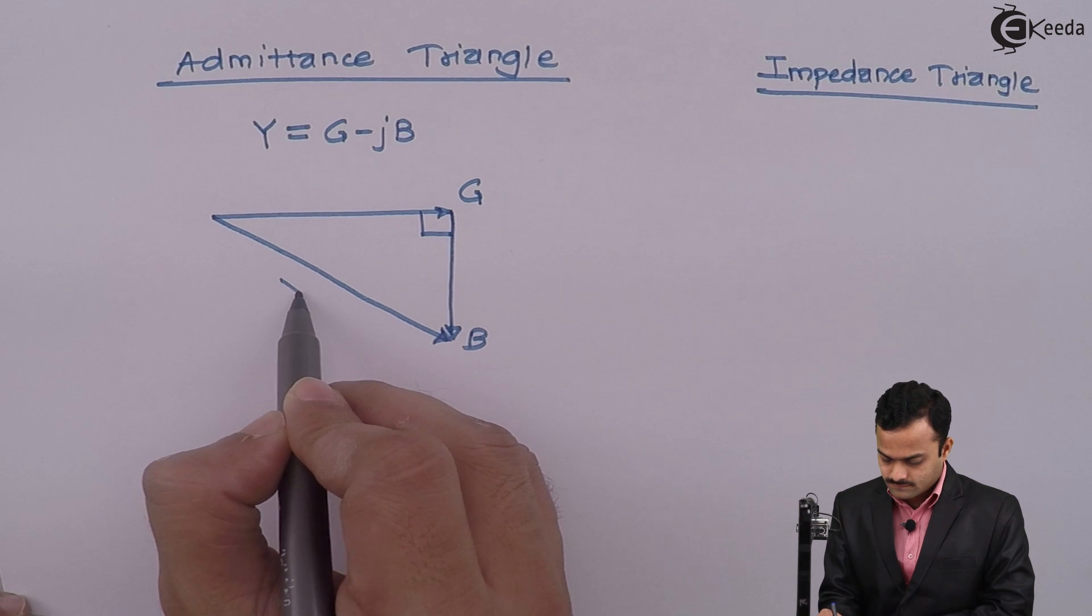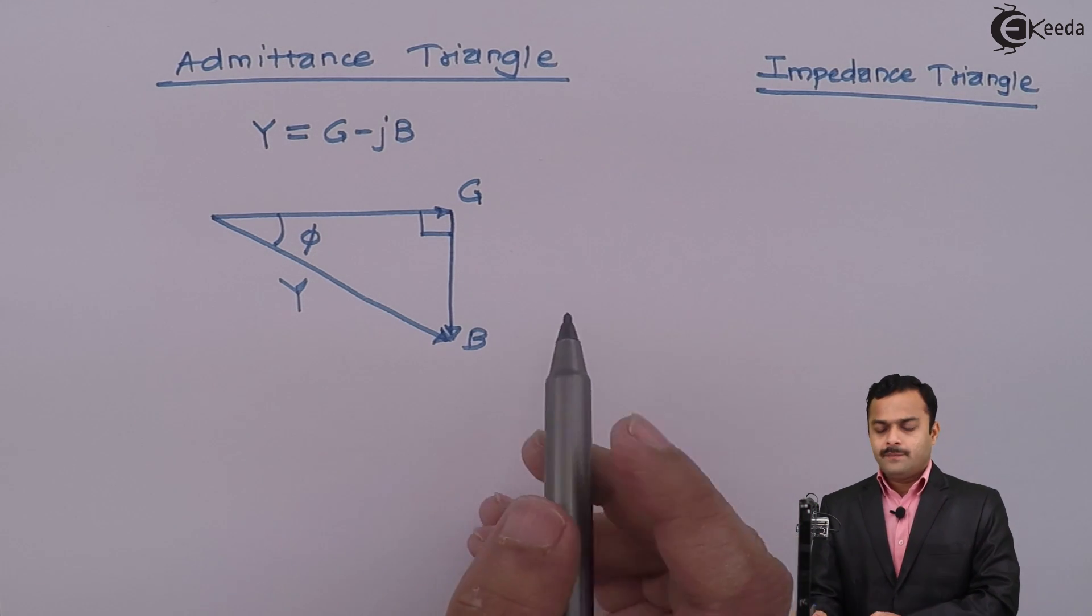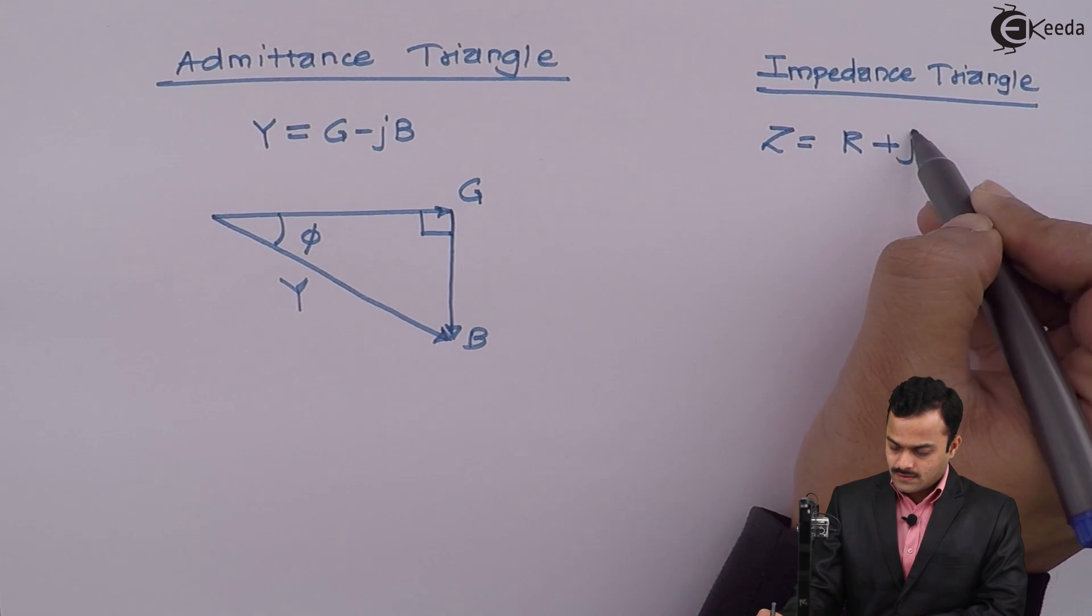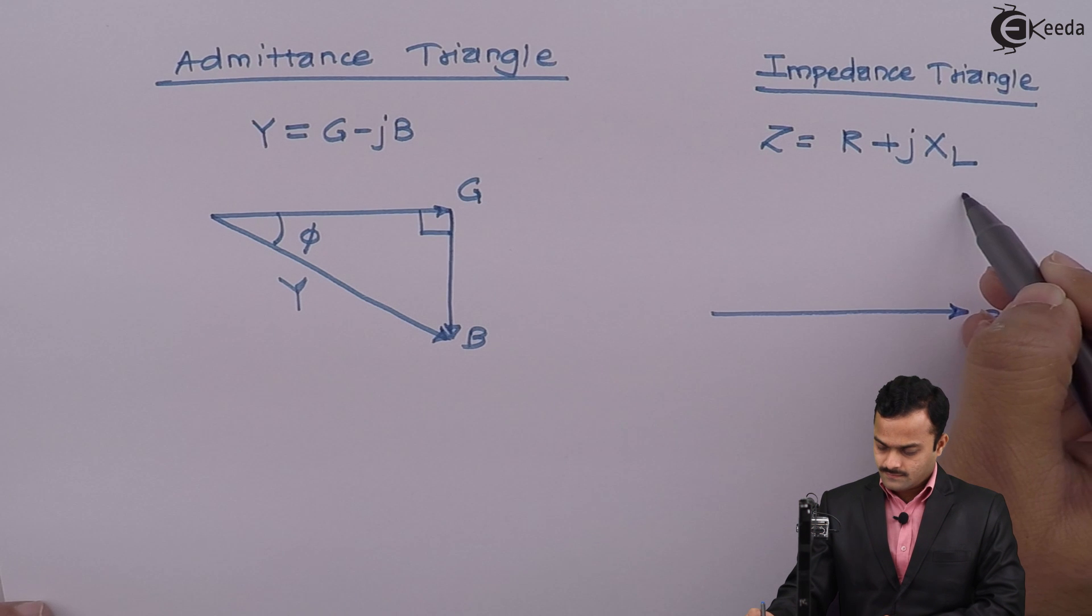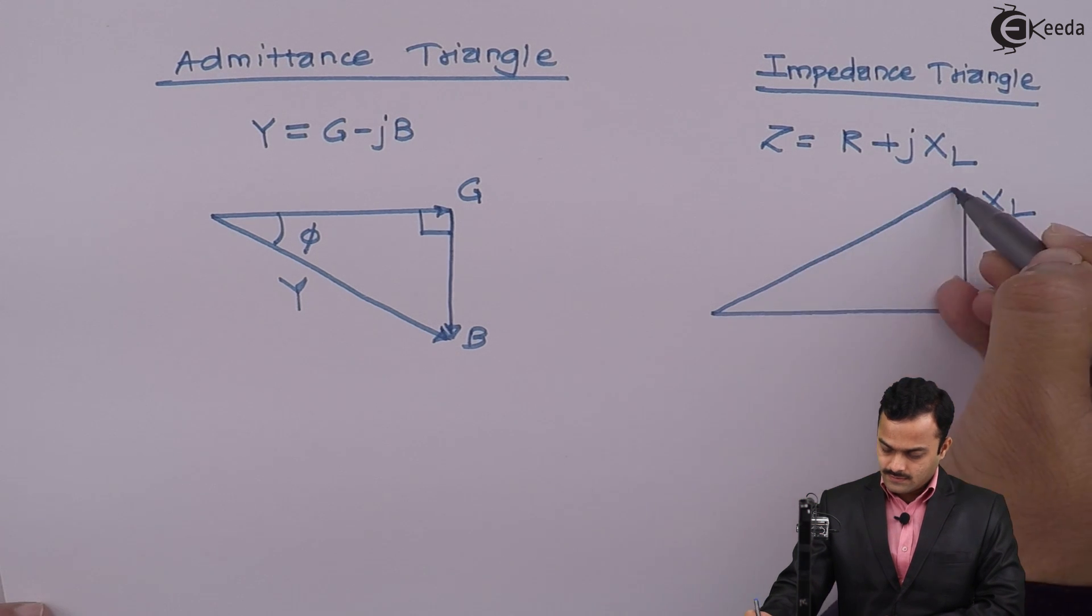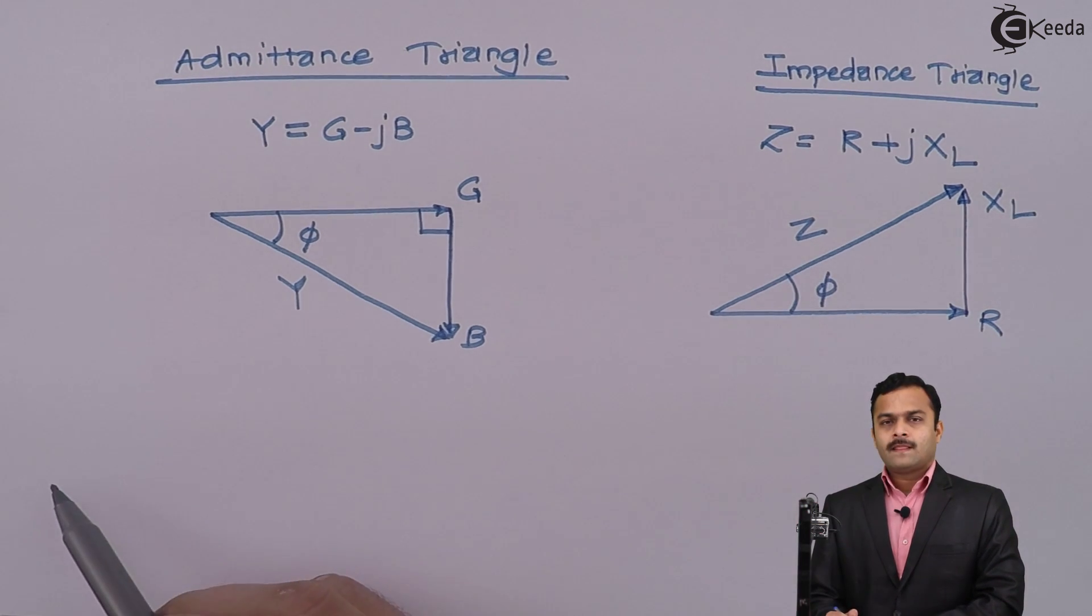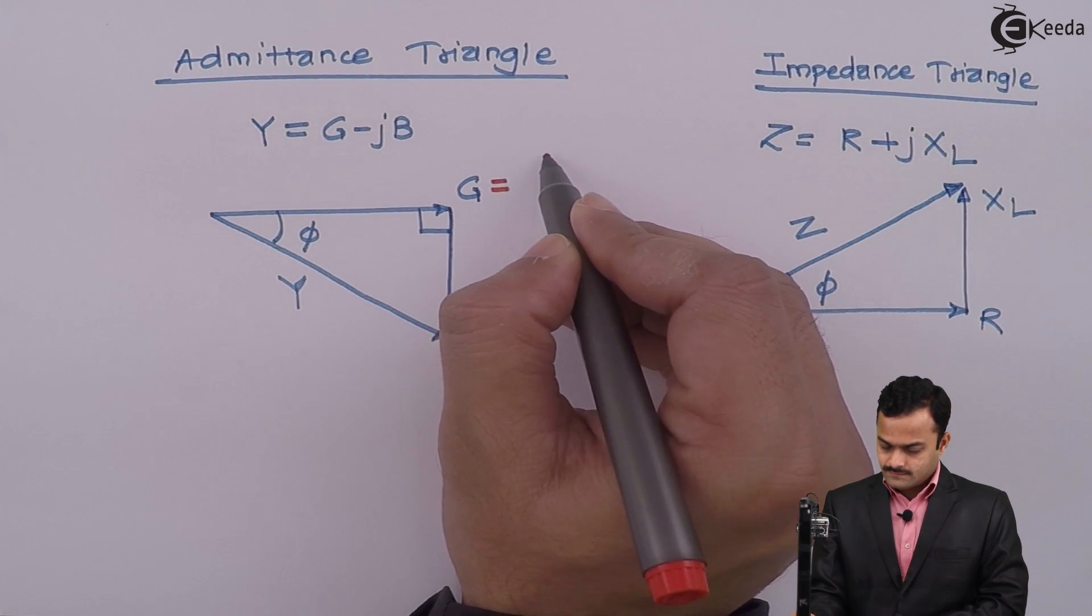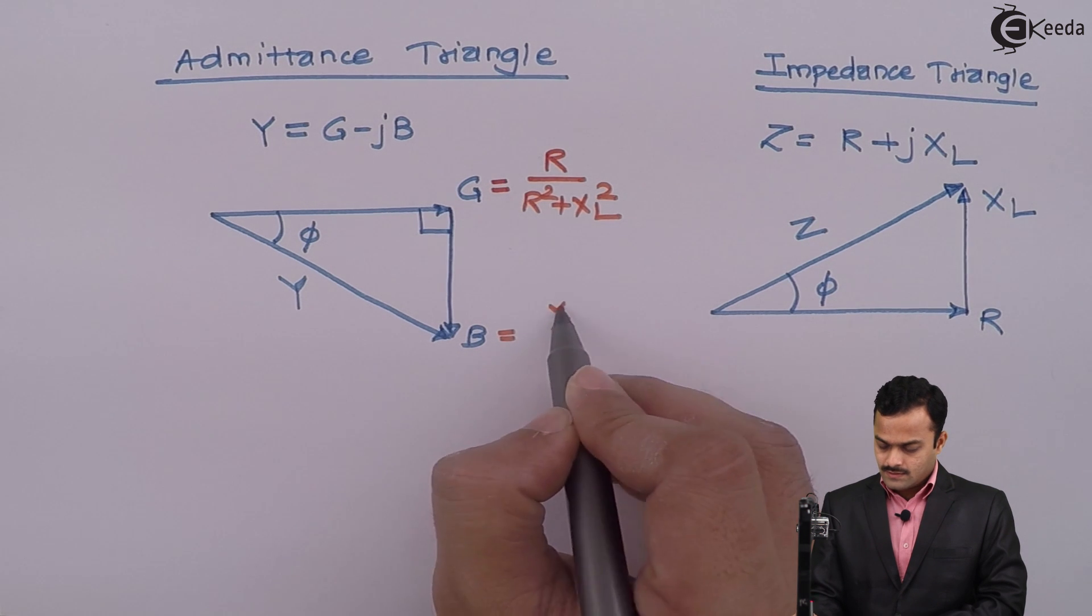The phase angle φ is the angle between Y and G. The corresponding impedance triangle for Z = R + jXL will be like this: R is the real term, +jXL will come like this, and this will be Z, where phase angle φ is the angle between Z and R. Here I can say G is R/(R² + XL²) and B is XL/(R² + XL²).